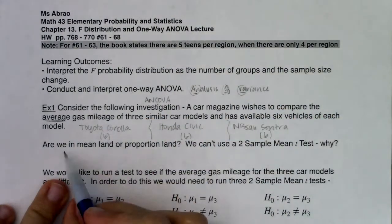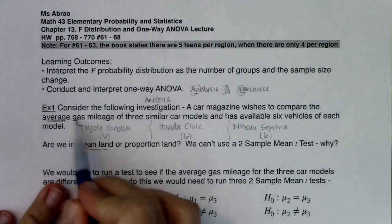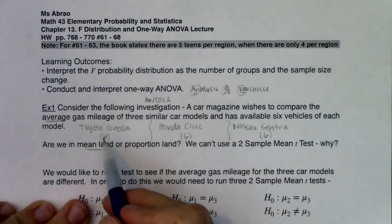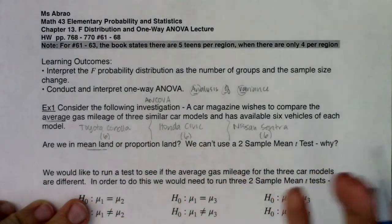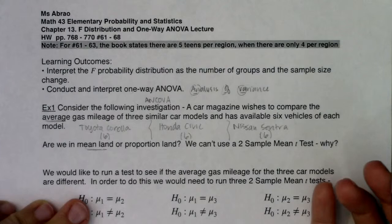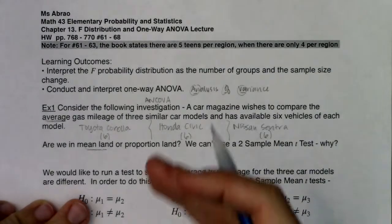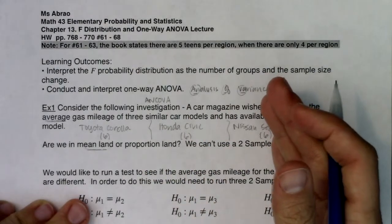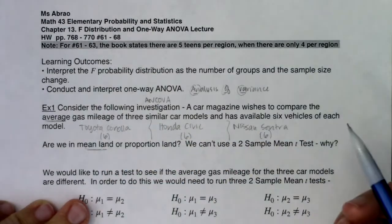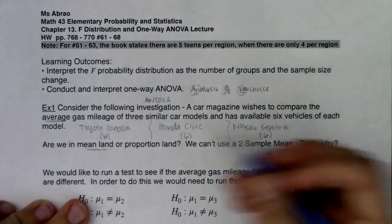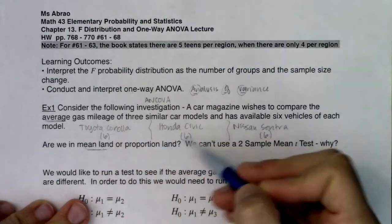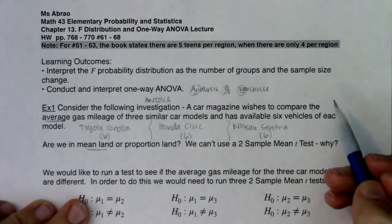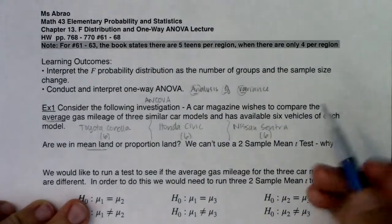Now, are we in mean land or proportion land? We are in mean land because we saw the word average. From each of these vehicles, each of these 18 vehicles in total, we're going to be getting a number from them. I want to figure out how many miles did you drive so I can divide that out and get your average gas mileage. I want to figure out how many miles per gallon did you get because I'll know how big each of these tanks are, how many gallons they're holding. So I'll get the average gas mileage.